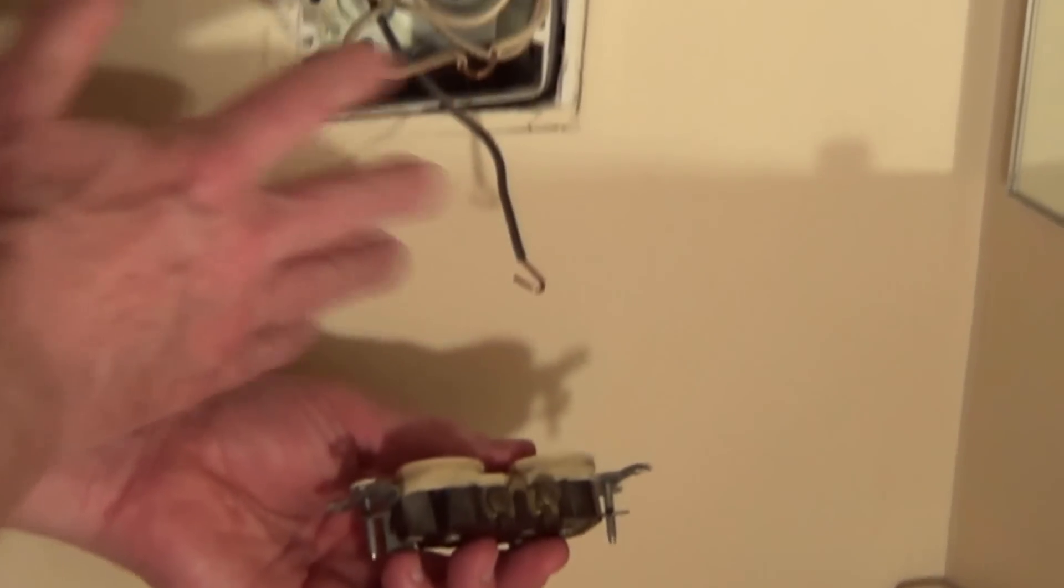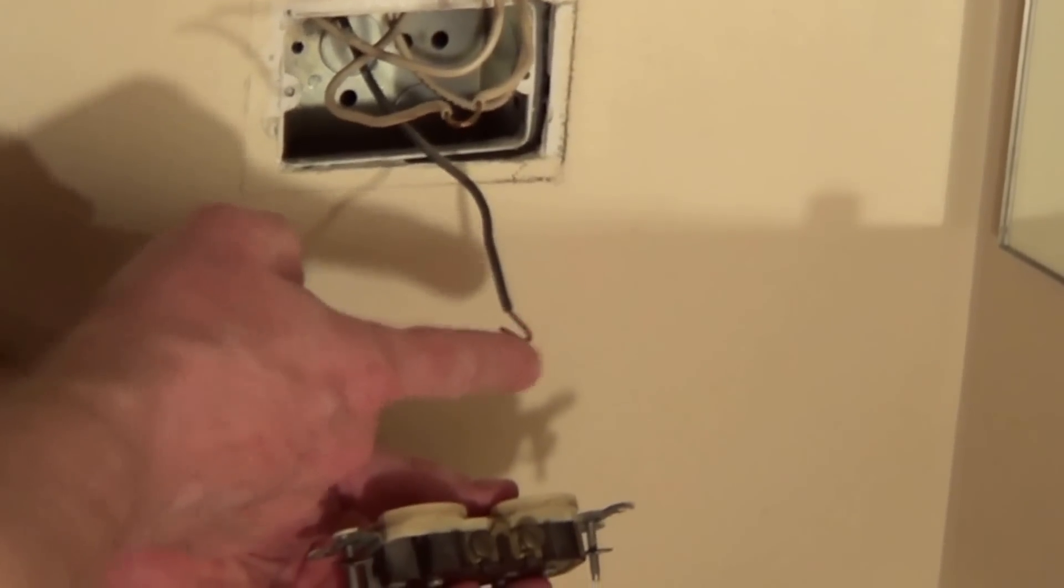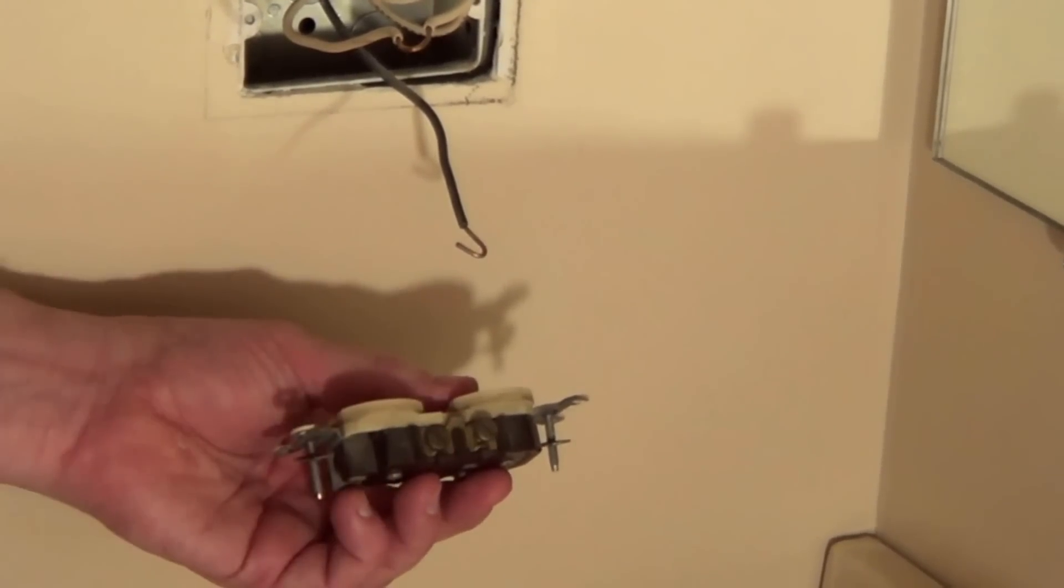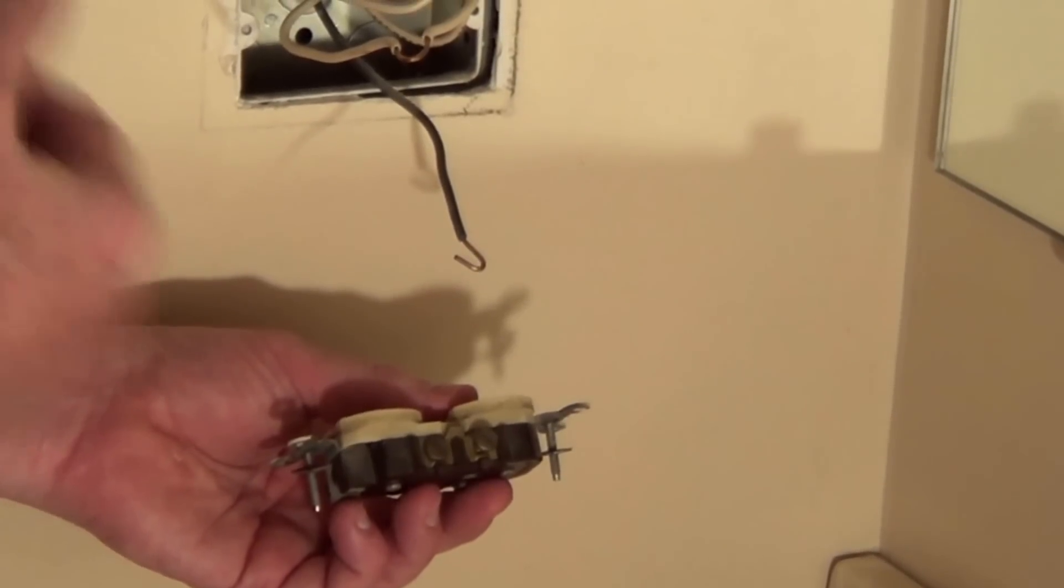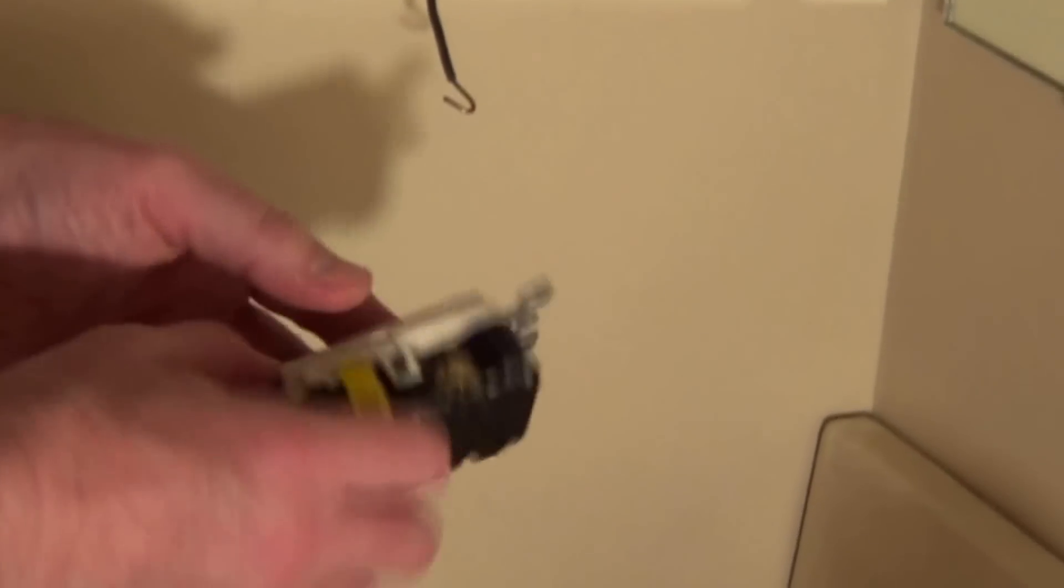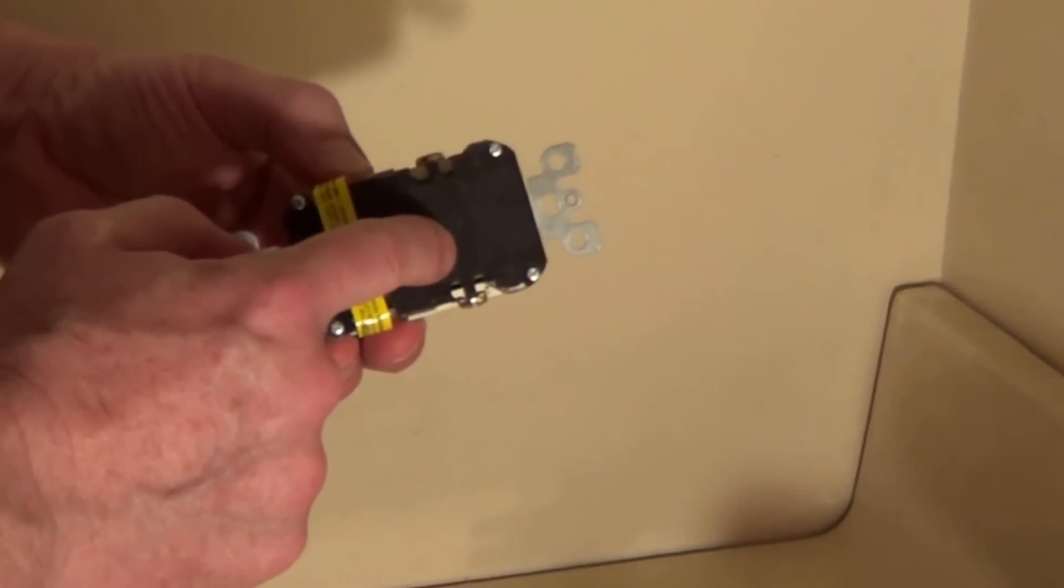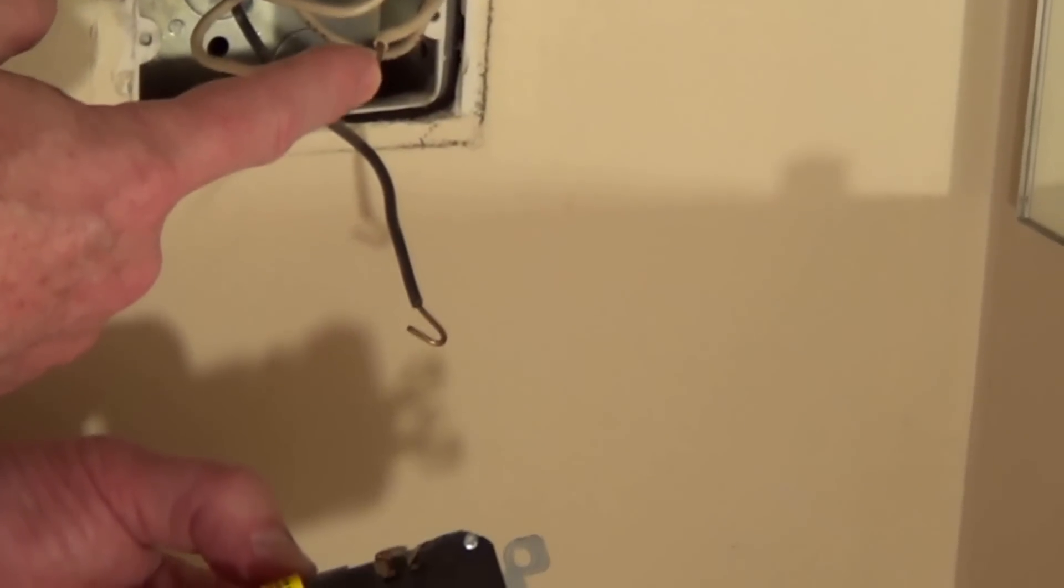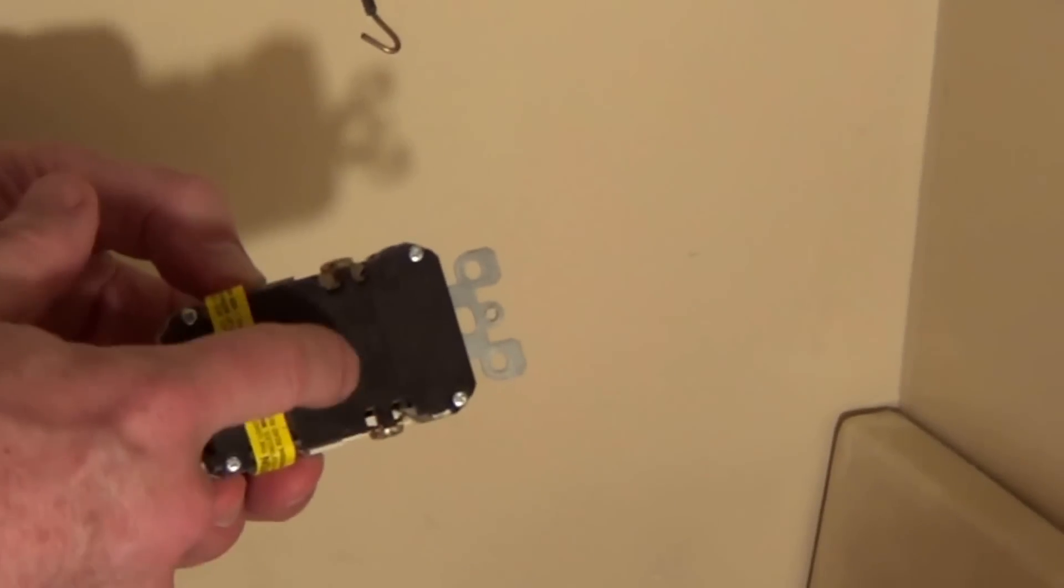The circuit we're working on had one hot, this black wire coming to the brass screw, and there wasn't a second wire going on to another outlet somewhere down the line. In this case when you have a GFI, you're going to have a line side. In a situation like this, we have just one hot and then we have the neutral going back to the service panel, so we're only going to be using the line side.